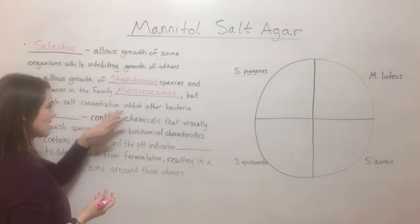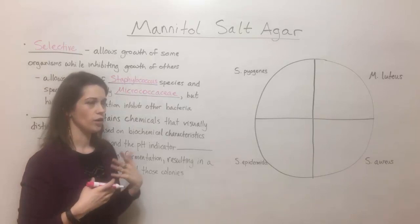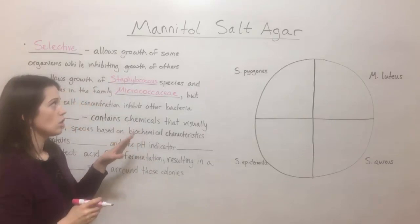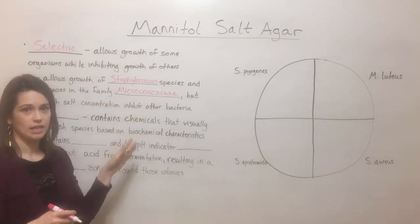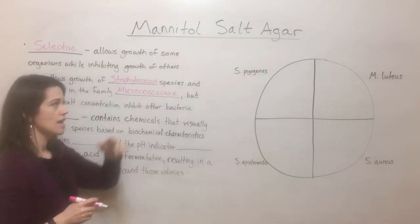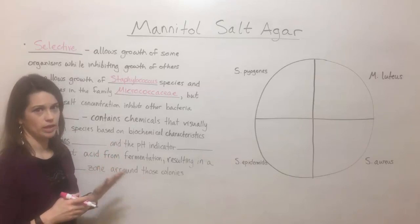For example, if you were looking under a microscope after having done a gram stain, you would know that Staphylococcus and Micrococcus are both gram-positive cocci, meaning they are spherical in shape. But mannitol salt agar can let you know that you're working with either Staphylococcus or Micrococcus and definitely not Streptococcus, which is another gram-positive coccus, because it can't live in that high salt concentration. The high salt concentration inhibits not only Streptococcus but also virtually all gram-negative bacteria.